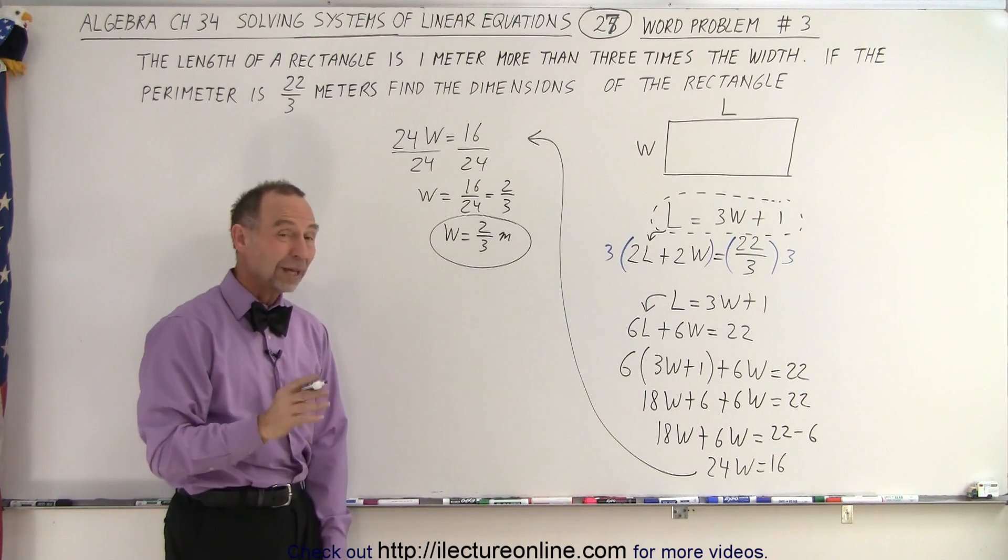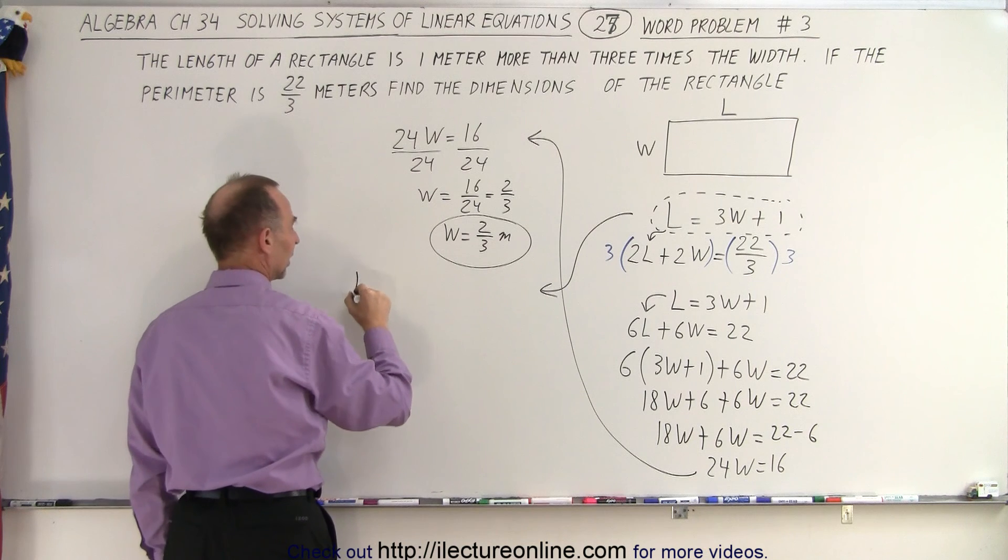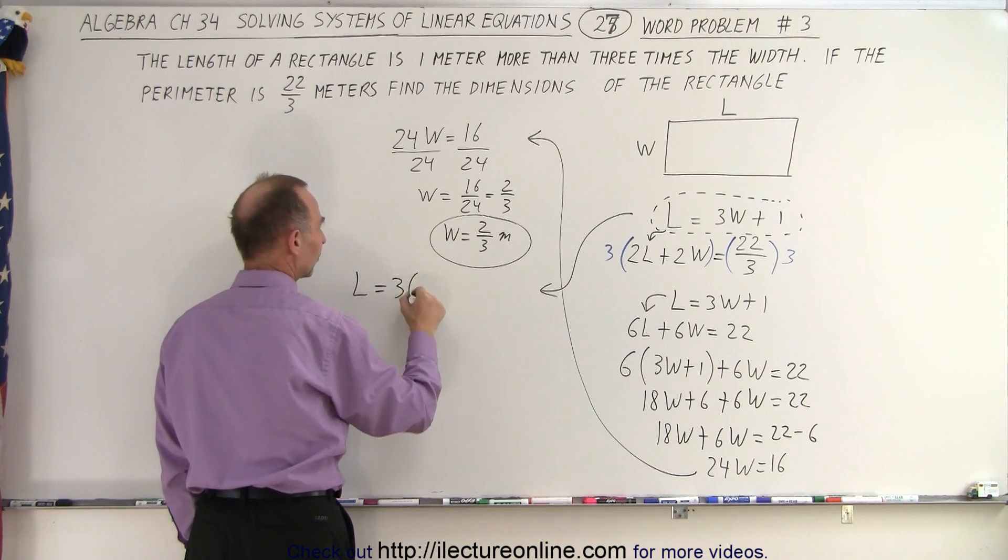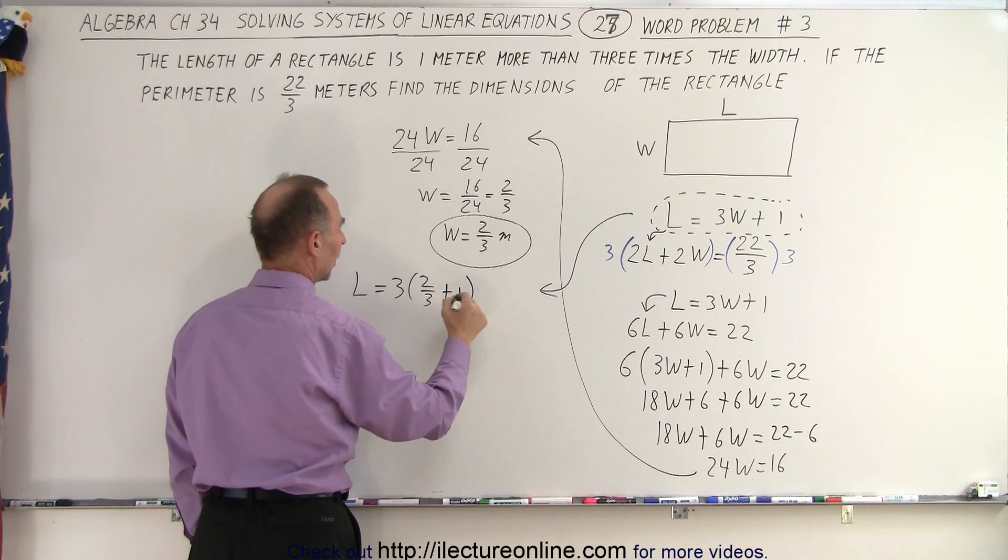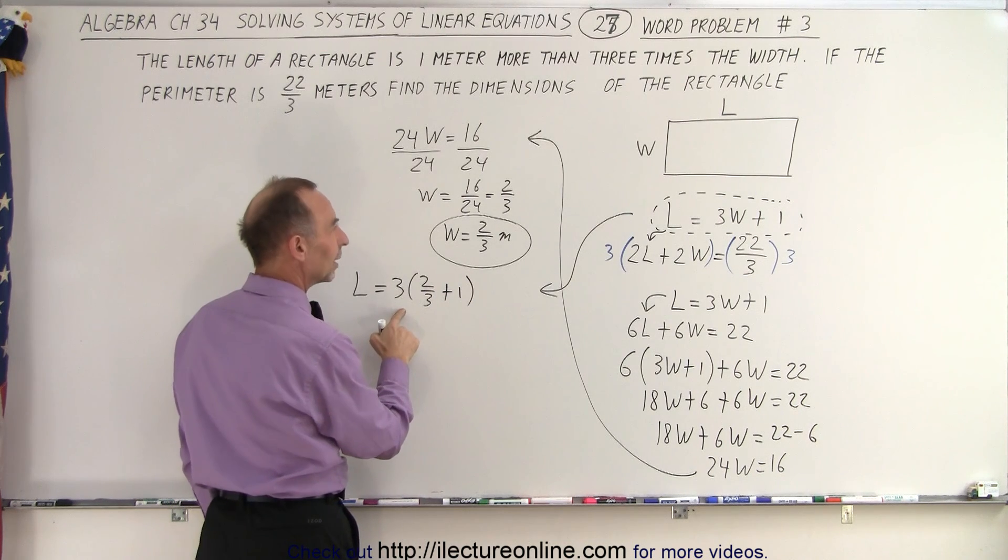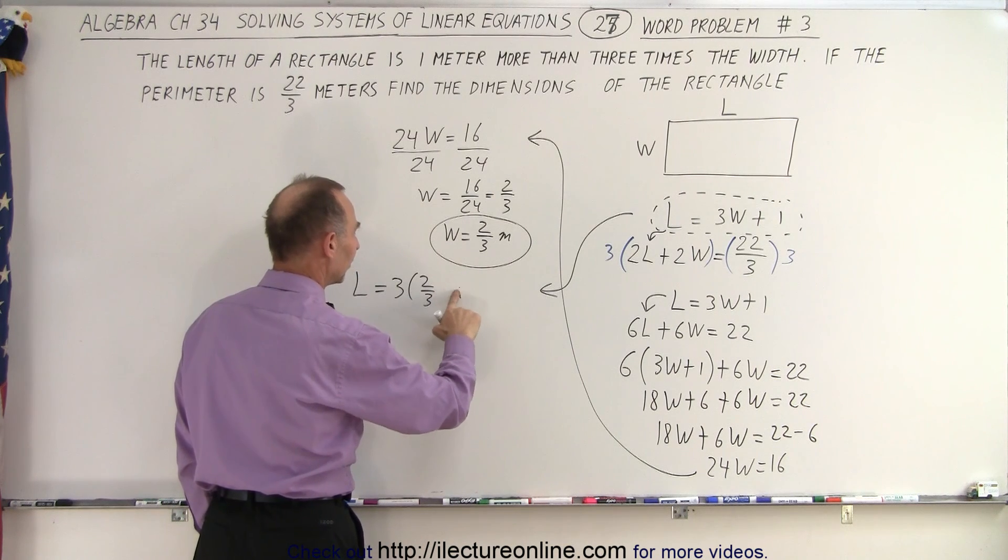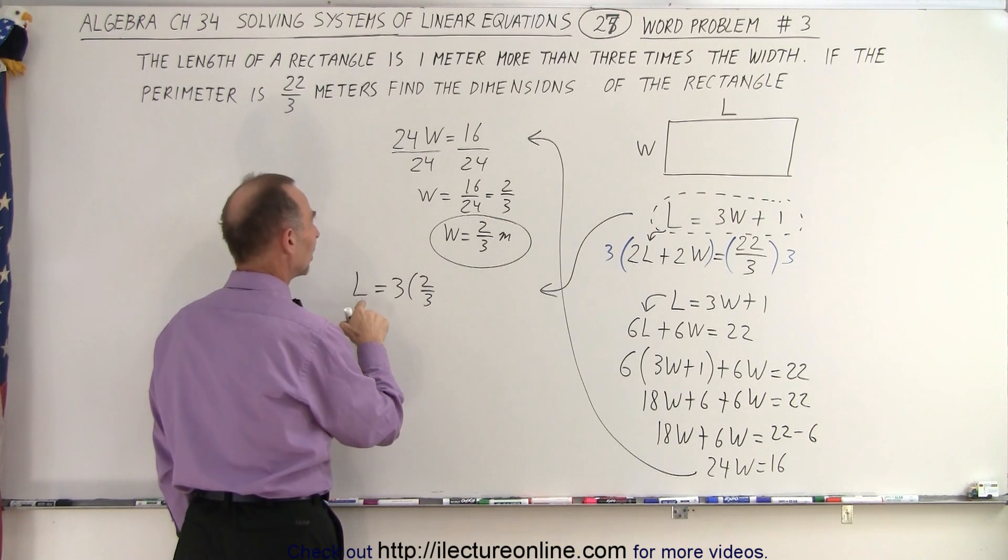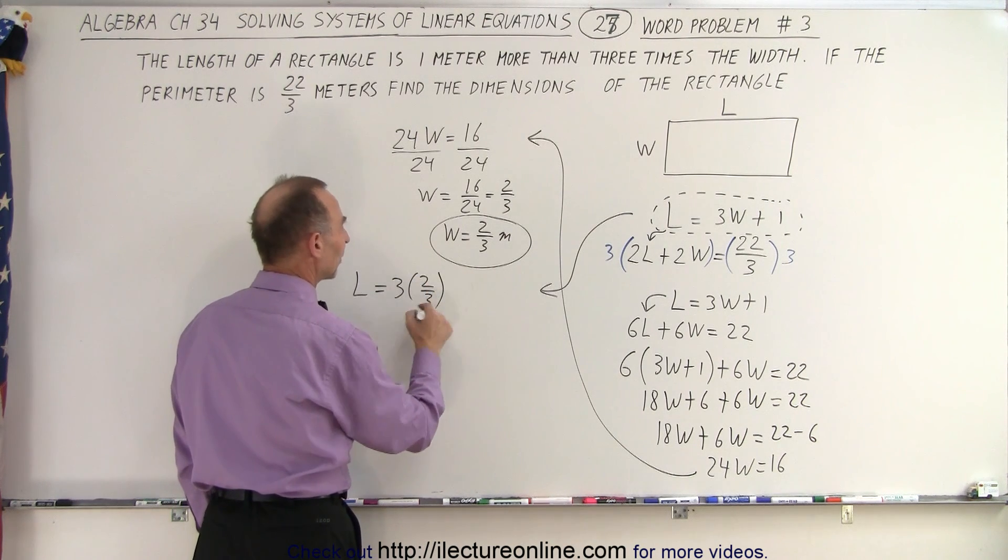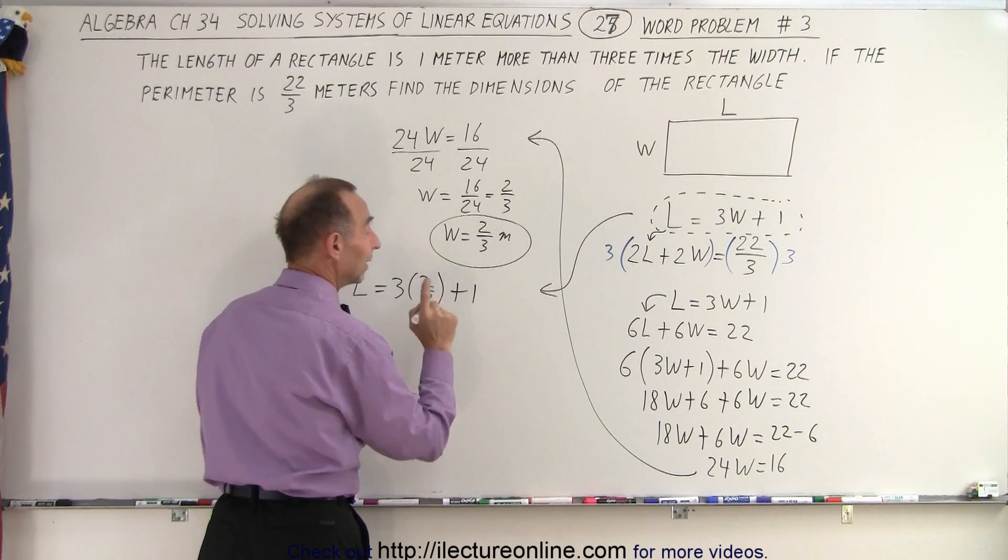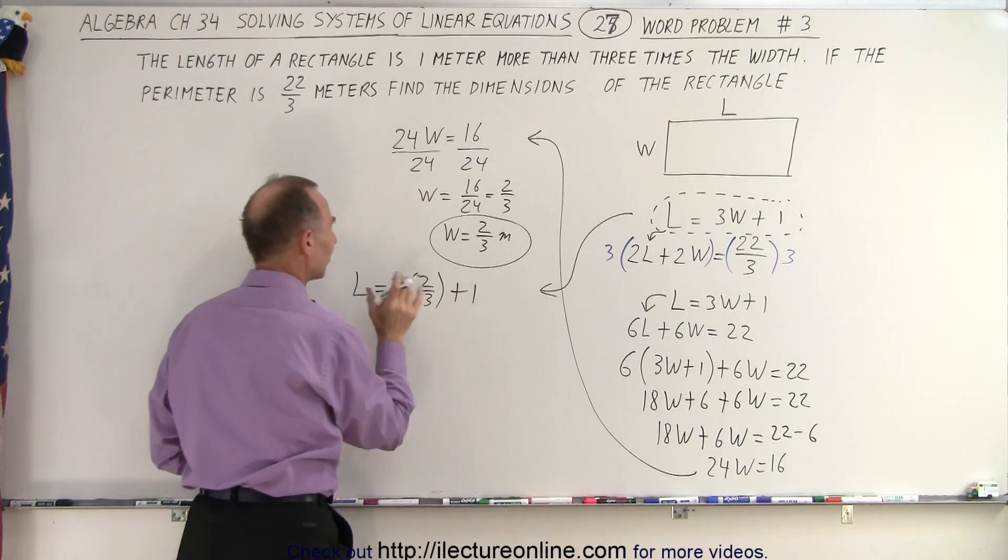Once we know the width, now we use the first equation to find the length. So we have the length is equal to 3 times the width, which is 2 thirds, plus 1. So 3 times the width. Oh, be careful here. You need to be careful. Make sure we make the exact copy. So the length is 3 times the width, and the width is 2 thirds. So 3 times 2 thirds plus 1. That's how we want to write it. We want to make sure that this is exactly the same as that.